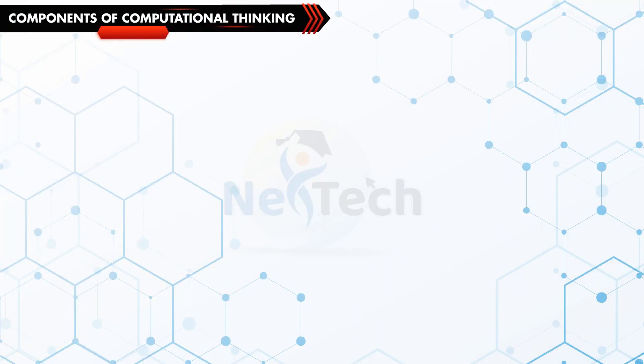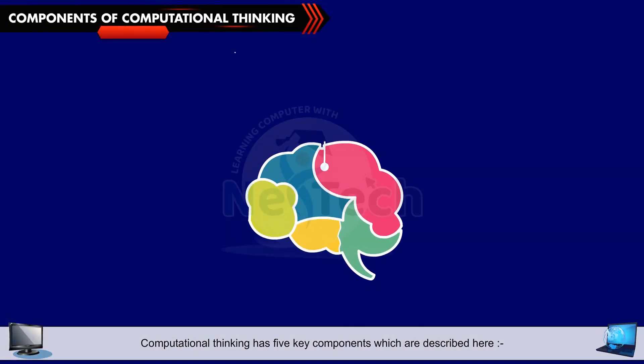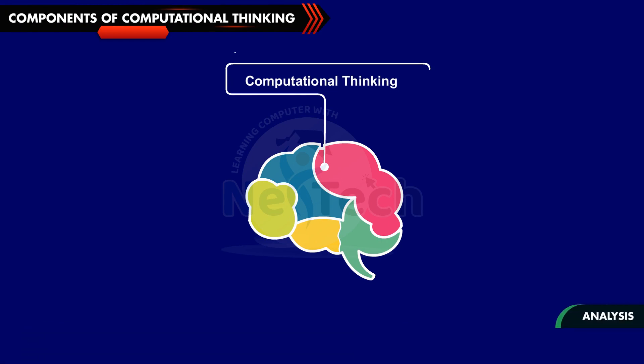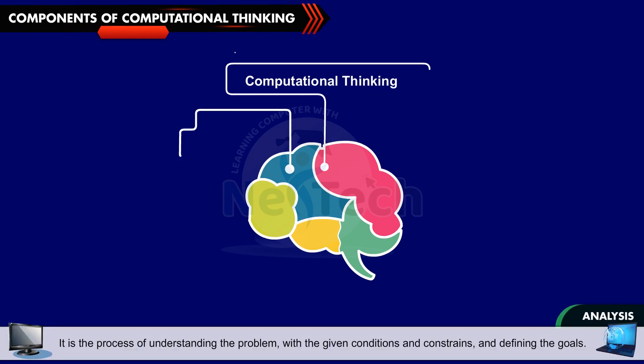Components of Computational Thinking: Computational Thinking has five key components which are described here. Analysis: It is the process of understanding the problem with the given conditions and constraints and defining the goals.